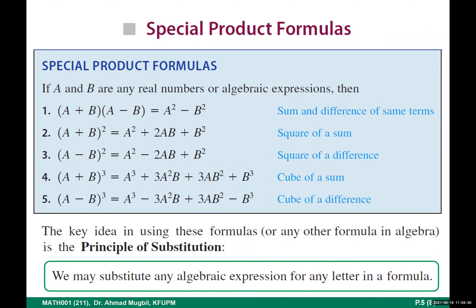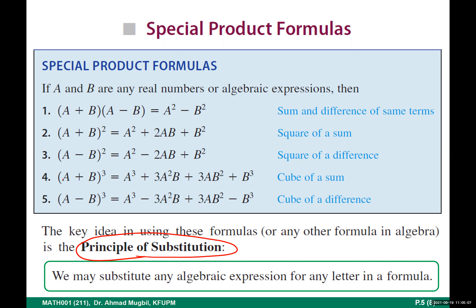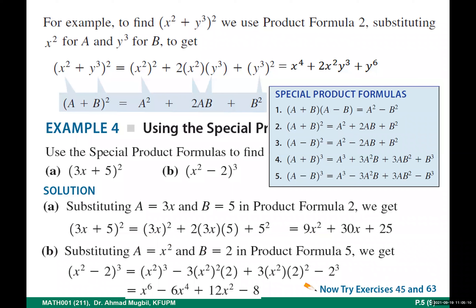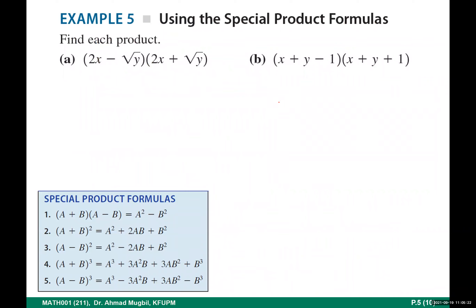At the end of the previous class, we covered the special product formulas — we proved most of them and showed how to prove all of them. You can remember them by their names: cube of difference, cube of sum, sum times difference, square of difference, square of sum, and so on. Most importantly, there is the principle of substitution: we use these formulas not just for a and b, but for other expressions — we consider what is a and what is b, and then apply the formulas.